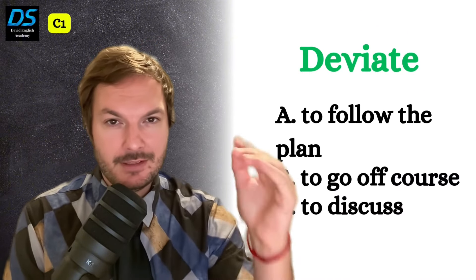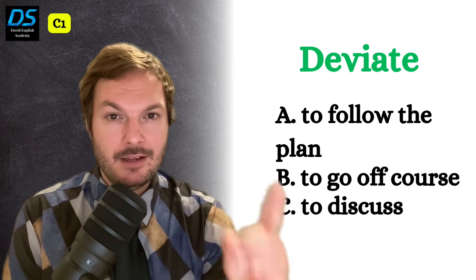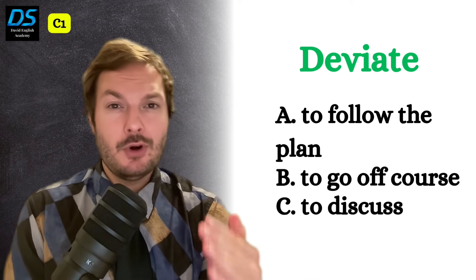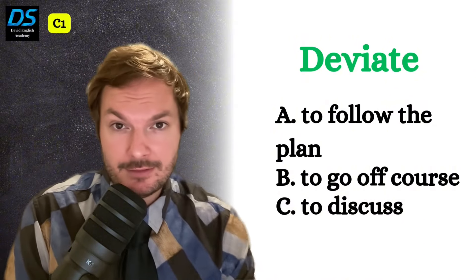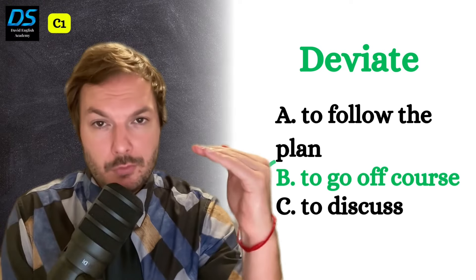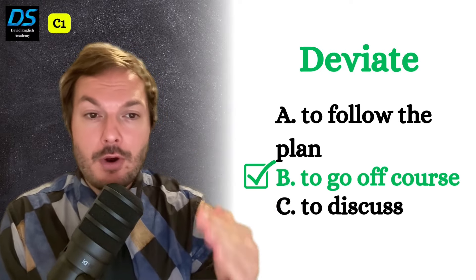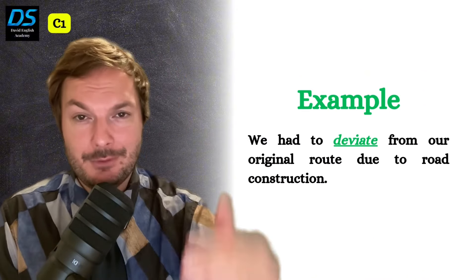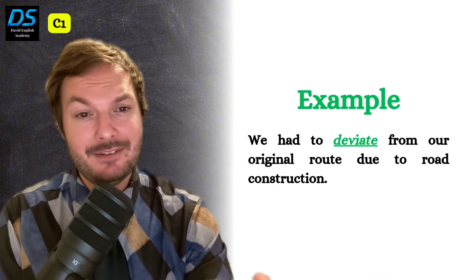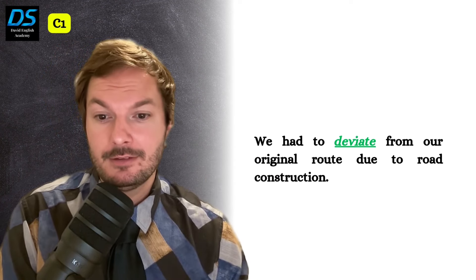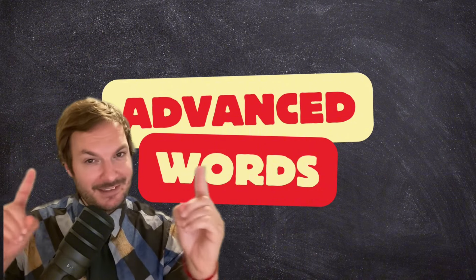Next word. Deviate. Does this word mean to follow the plan, to go off course, or to discuss? To deviate means to go off course, or stray from the path. Example. We had to deviate from our original route due to road construction. Advanced words. Let's go.